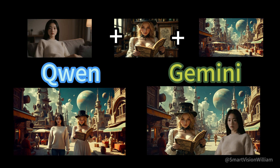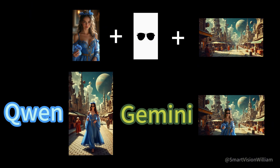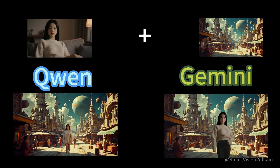NanoBanino attempts to merge, but sometimes the person's proportions or the merging artifacts are more noticeable. So for complex compositions merging multiple different images into one, QWIN generally has an advantage in naturalness and detail retention. Sometimes when using NanoBanino, even though the images were self-generated, it mistakenly identifies them as real people, leading to task failure. In this case, using QWIN's local running version is more advantageous because it has no such restrictions.